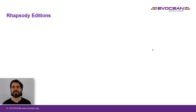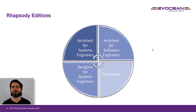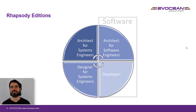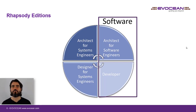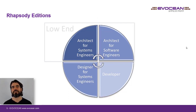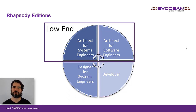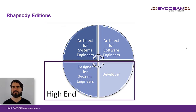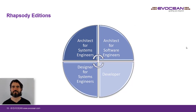Now to the second and more interesting question: what is the difference between all these editions? Rhapsody usage is divided into two disciplines — system engineers on the left and software engineers on the right. For both disciplines there is a low-end, low-budget and a high-end edition. The low-budget versions are called Architect, while the high-end versions are called Rhapsody Designer for system engineers and Rhapsody Developer for software developers.